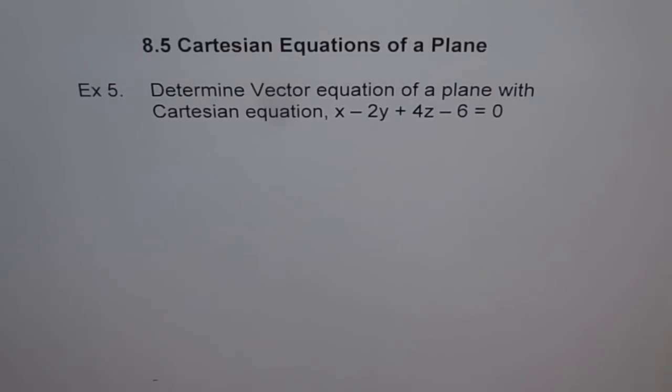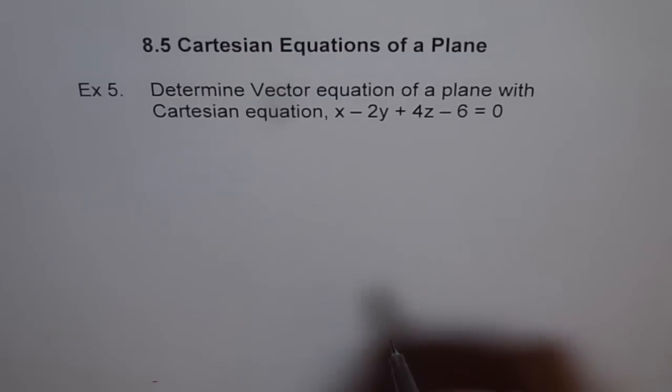Example 5. Determine vector equation of a plane with Cartesian equation x minus 2y plus 4z minus 6 equals 0. Well, we will like to do this problem in two different ways. Let me use this method first.